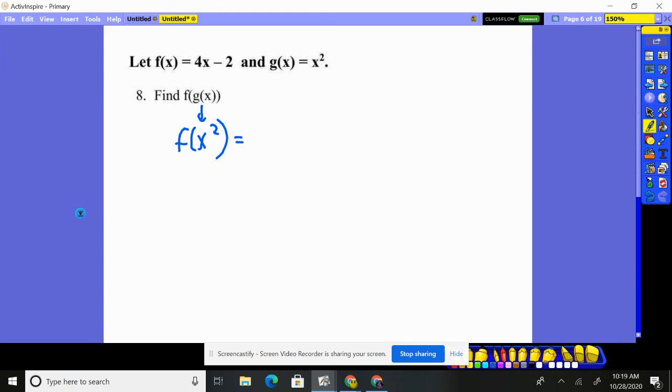So we go to the f function. Now remember, the f says to do four times whatever they give you, take away two. Well, what did they give us? They gave us an x squared and we then take away two. And so that's our final answer: four x squared, take away two.